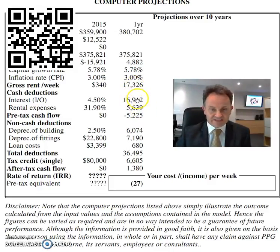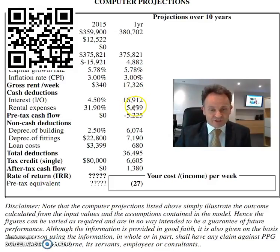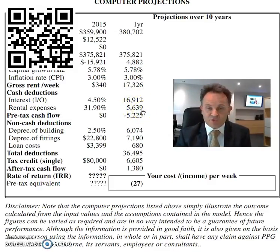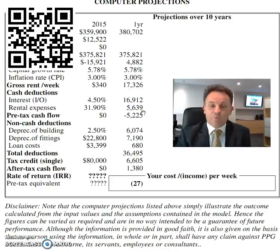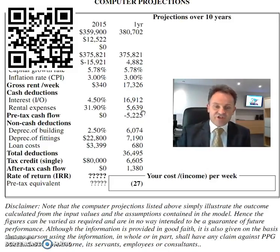All those expenses come to around $5,639. So if we take the rent of $17,326, minus interest of $16,912, and minus expenses of $5,639, you'll be out of pocket about $5,225 per year, which is roughly around $100 a week.